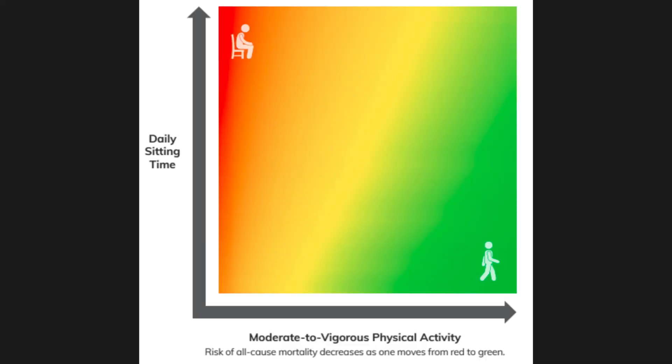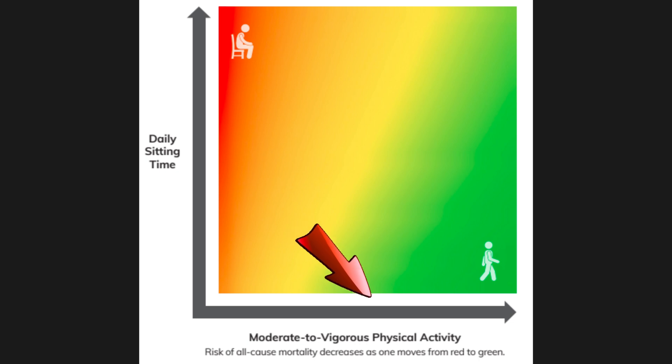When we look at this graph, on the y-axis — the axis going up and down — this is the amount of time that we are spending sitting during the day. On the horizontal axis — the axis going from side to side on the bottom — is the amount of moderate to vigorous activity that we are doing throughout the day.